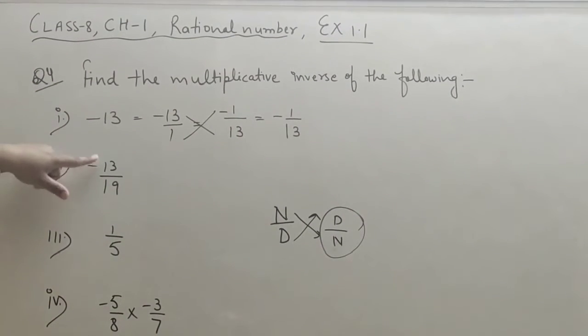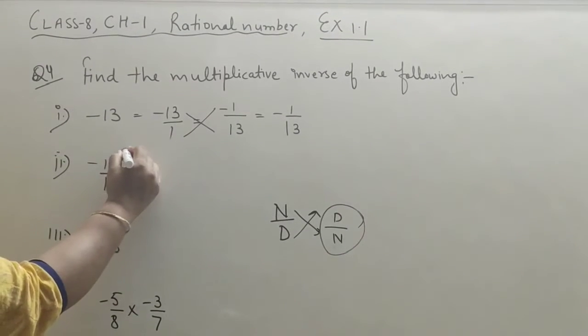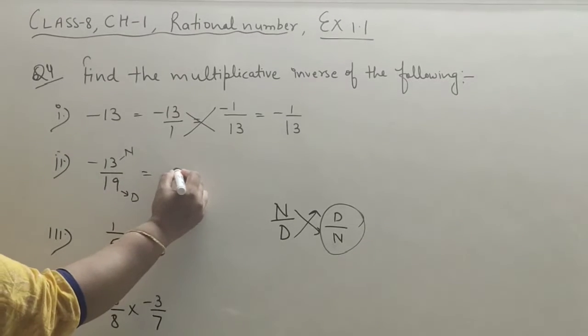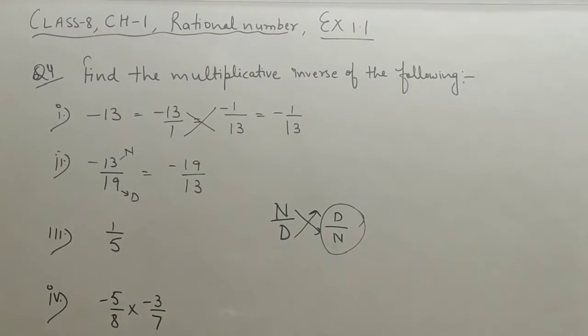The second part is minus 13 upon 19. Here this is the numerator, this is the denominator. So the answer will be minus 19 upon 13, and the sign will remain same.